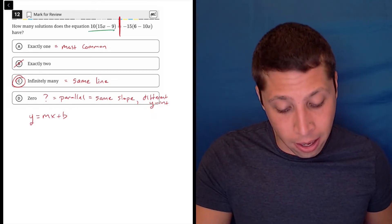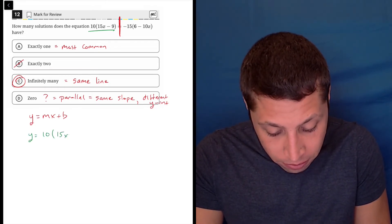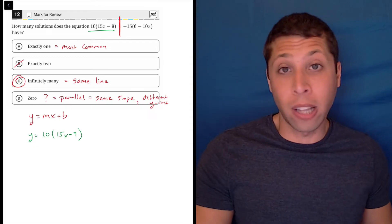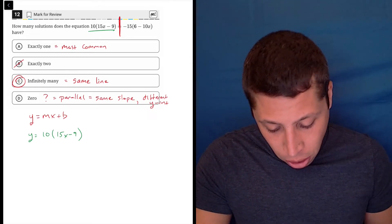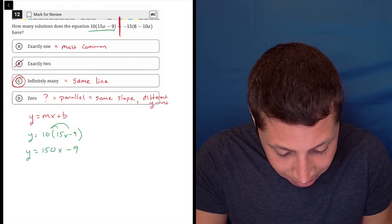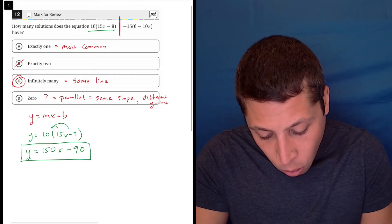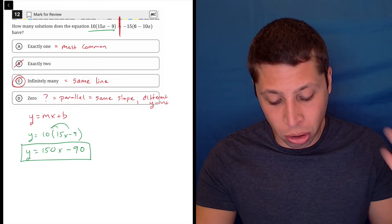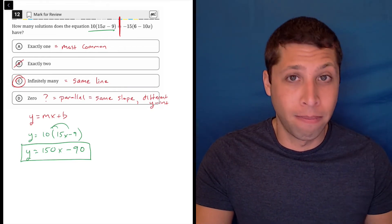So let's start with this left-hand side. That's y equals 10 times 15x minus 9. Well, that doesn't look like y equals mx plus b. mx plus b, there's no parentheses there. So let's fix that. y is equal to 150x minus 90. So that looks like a y equals mx plus b equation. There is a slope of 150, there is a y intercept of negative 90. That seems normal.